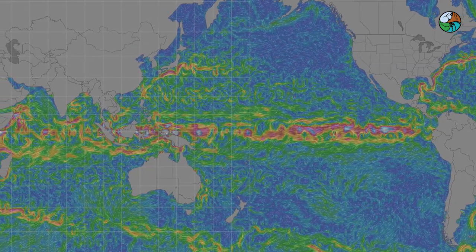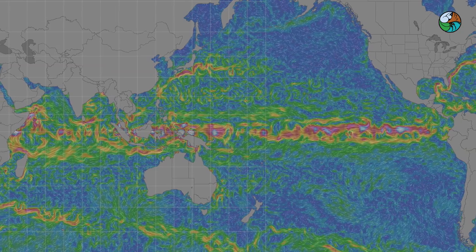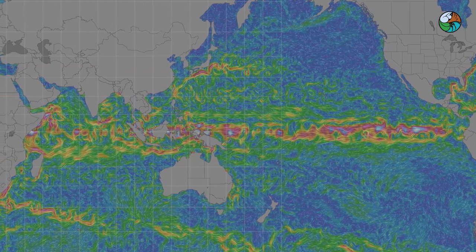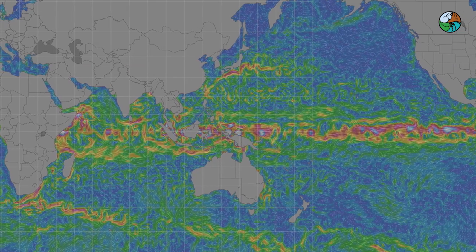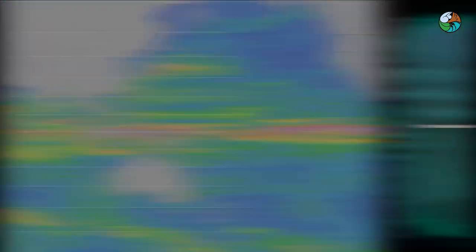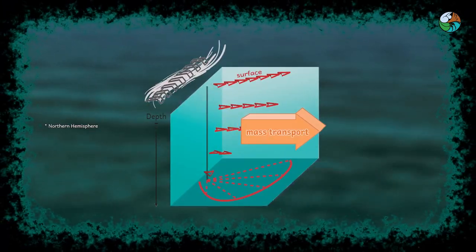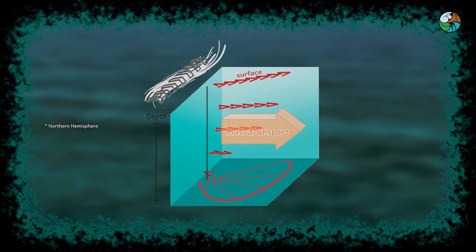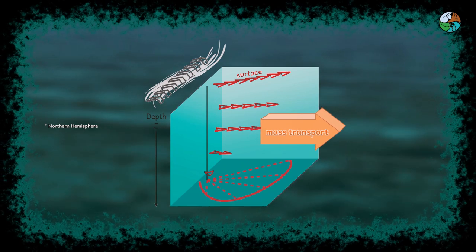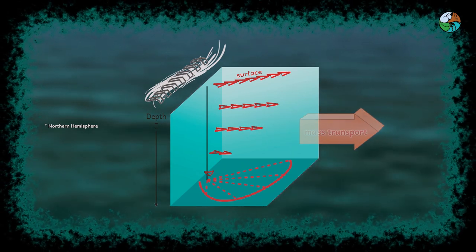In this experiment, we are going to study how wind drives ocean circulation. You are going to see the Ekman layers in the ocean. Due to Coriolis force, the wind direction and the water current direction are not the same. Our setup demonstrates the mechanism in the Northern Hemisphere.